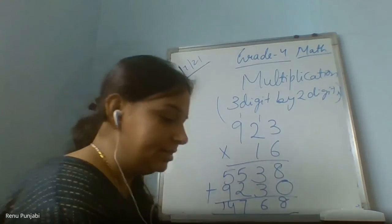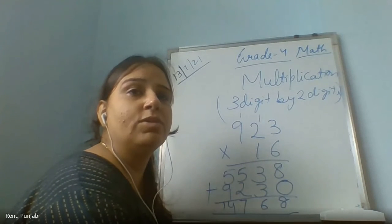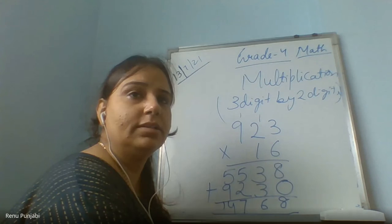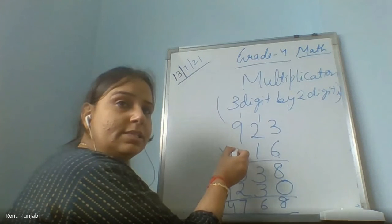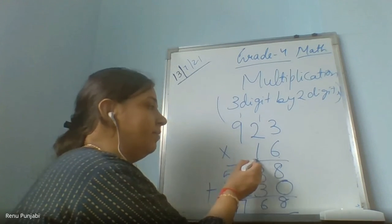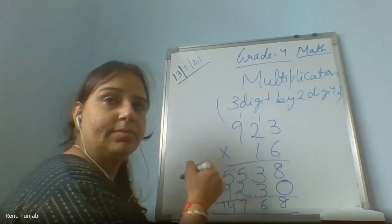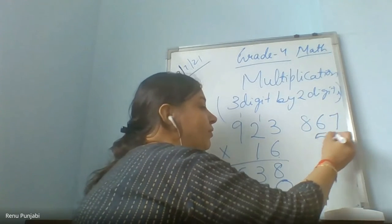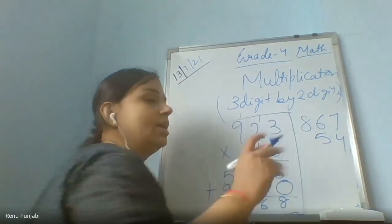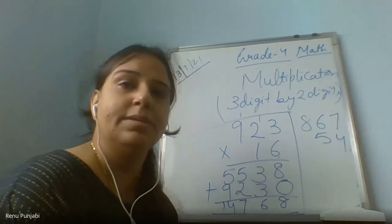So this will be your answer. This is how you do three-digit by two-digit multiplication. First multiply 6 by all three numbers, then write zero, then multiply 1 by all three numbers, then add. I am giving you one more sum: 867 multiplied by 54. Do it in the notebooks. I will send you a worksheet based on today's concept and also on multiplication.